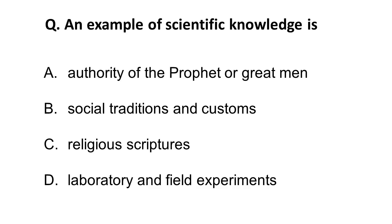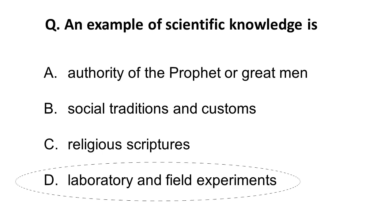The next question is: what is an example of scientific knowledge? Option A — authority of a prophet or great man — cannot be scientific knowledge because there is no experimentation. Social traditions, customs, and religious scriptures are also not scientific. Scientific knowledge is that which can be reproduced and is reliable. If someone claims something and it can be reproduced through experiment by many people, it qualifies as scientific knowledge. Therefore, the correct answer is laboratory and field experiments.